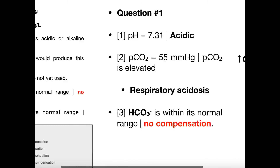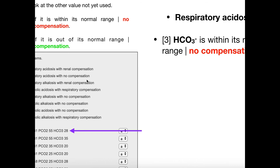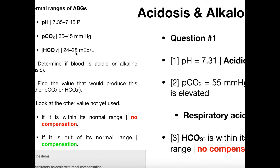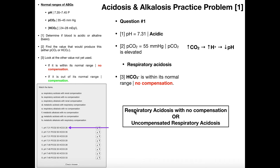For the last step, we look at the other value not yet used — bicarbonate. The bicarbonate value is 28, and our normal range is 24 to 28, so the bicarbonate is within the normal range. That means there's no compensation. Our final answer is respiratory acidosis with no compensation, or uncompensated respiratory acidosis. Some instructors may want you to be more specific: respiratory acidosis with no metabolic compensation.